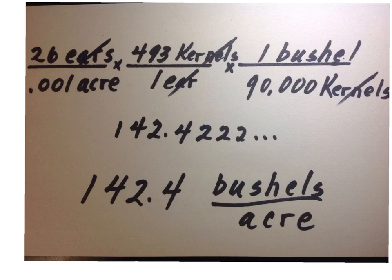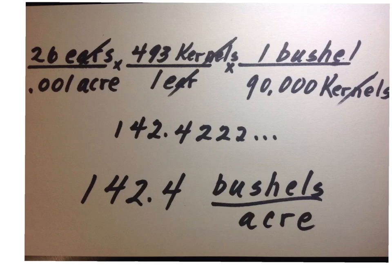If you have your calculator, punch along with me. Enter 26, divide by .001, multiply by 493, divide by 1, multiply by 1 — which of course doesn't change anything — and then lastly divide by 90,000 kernels. When you hit equals, you should get 142.42222, which repeats. We will round this to the nearest tenth, giving us our answer of 142.4 bushels per acre.